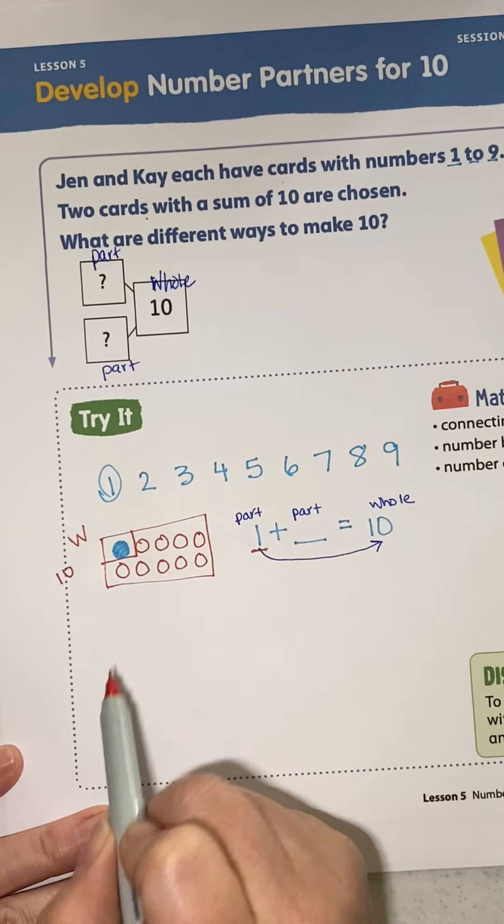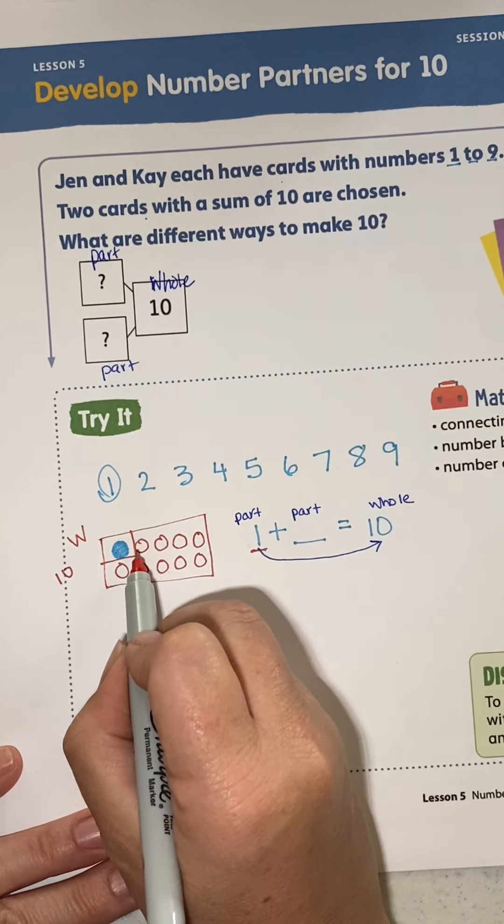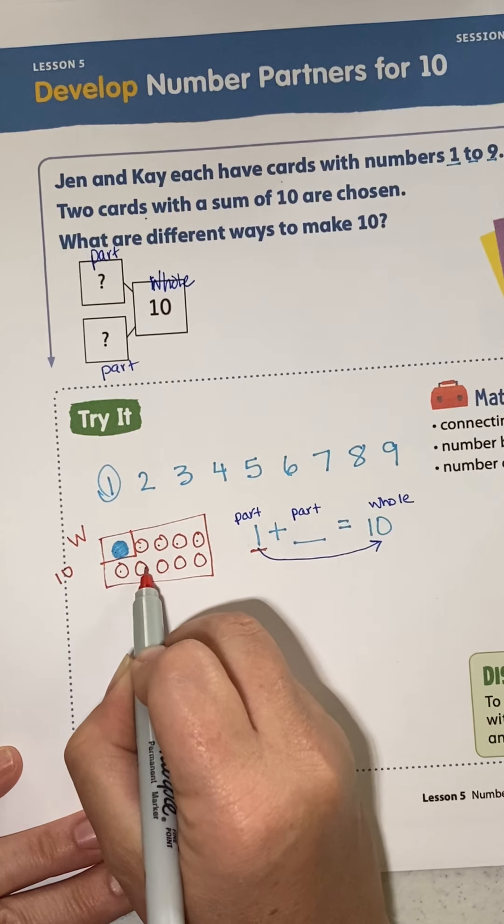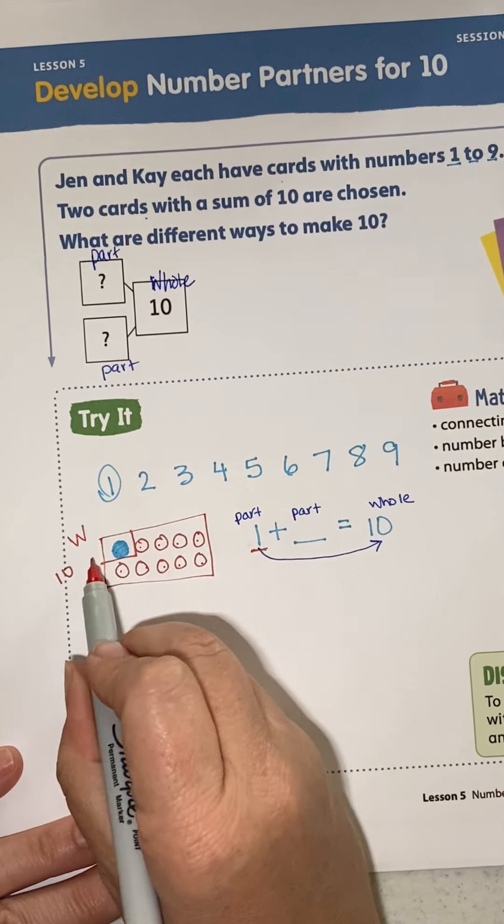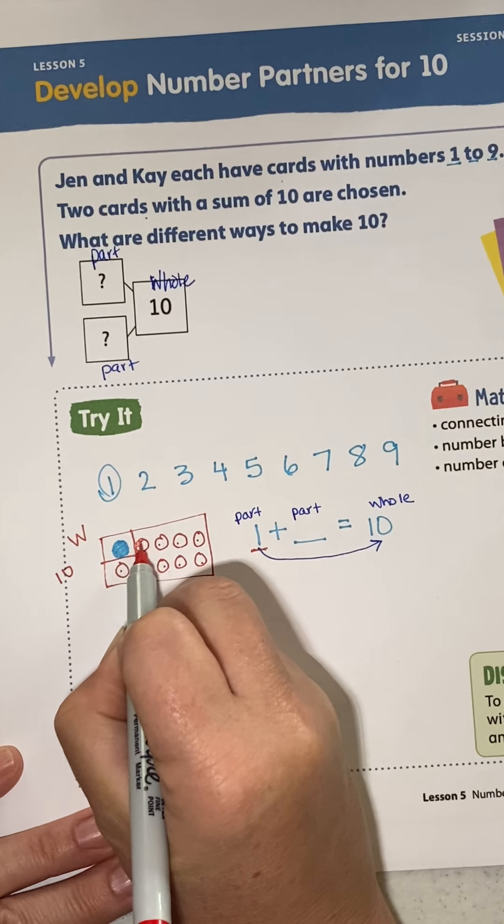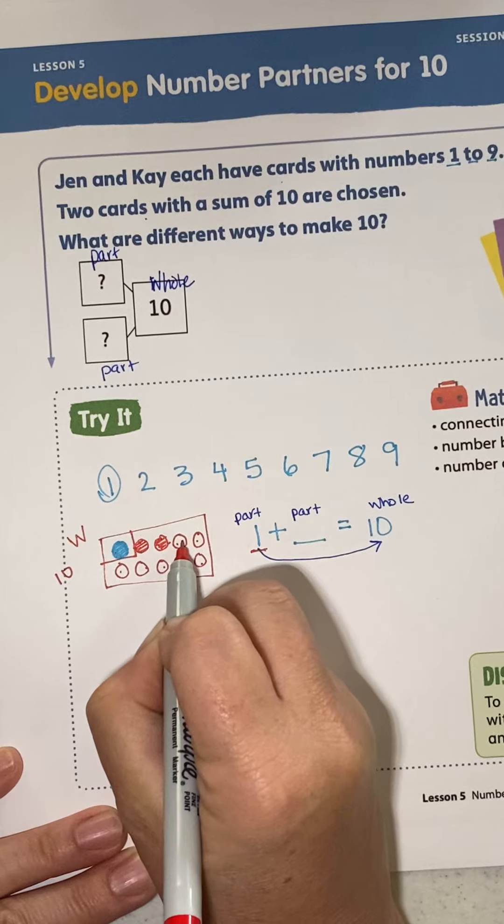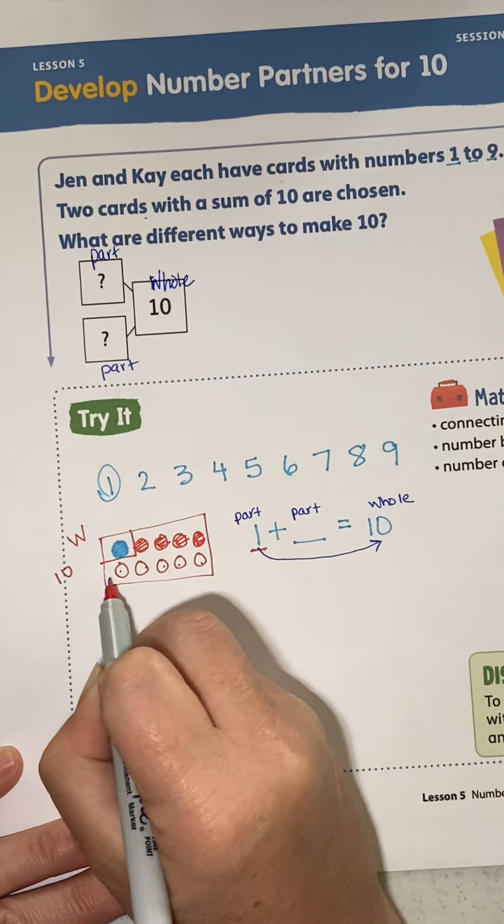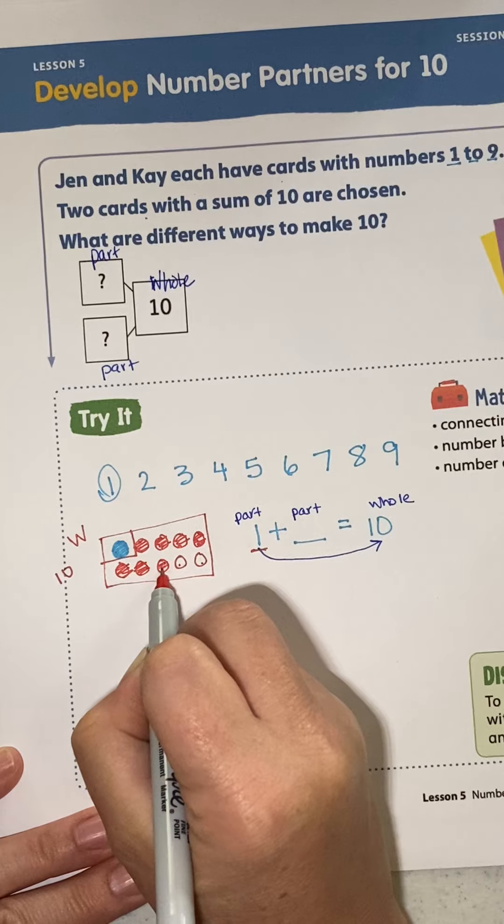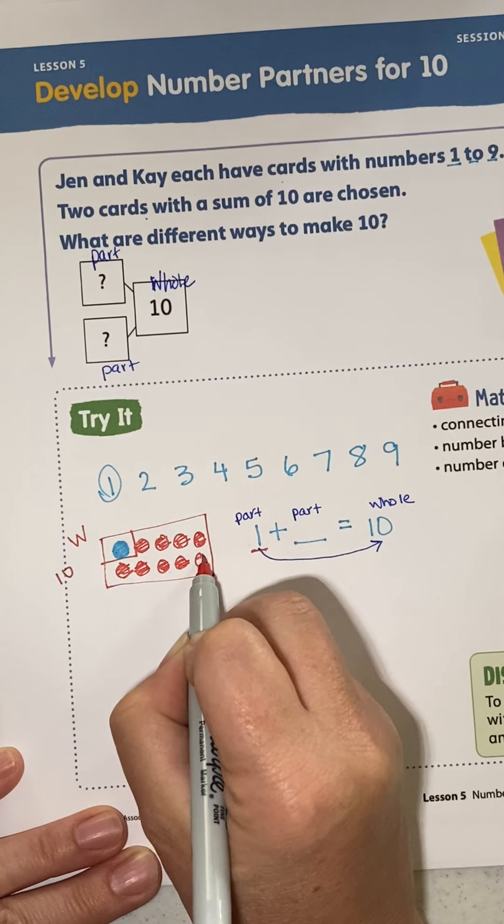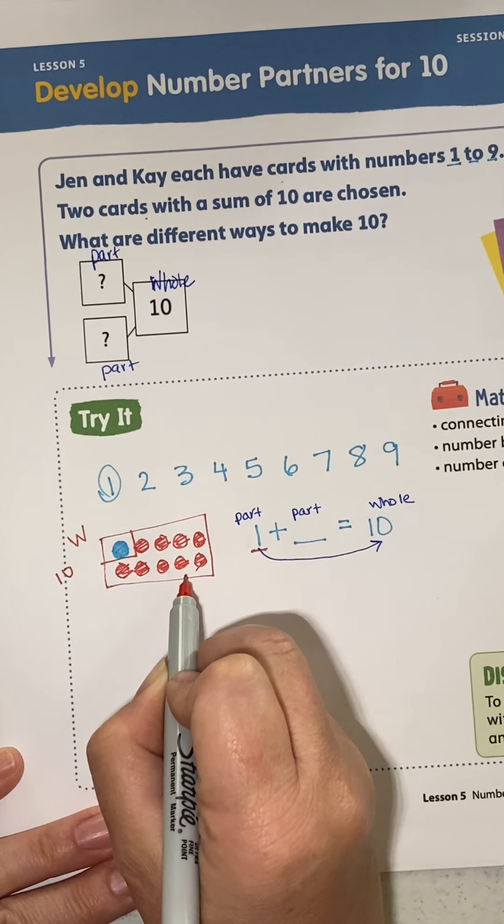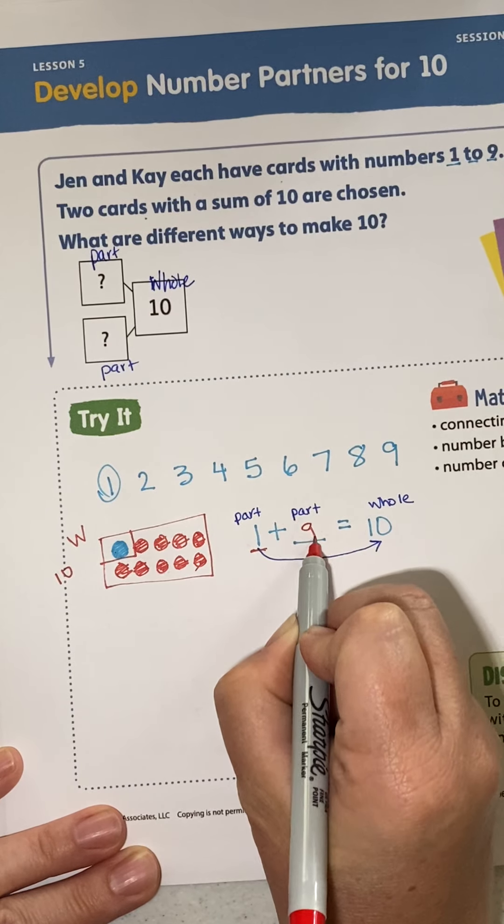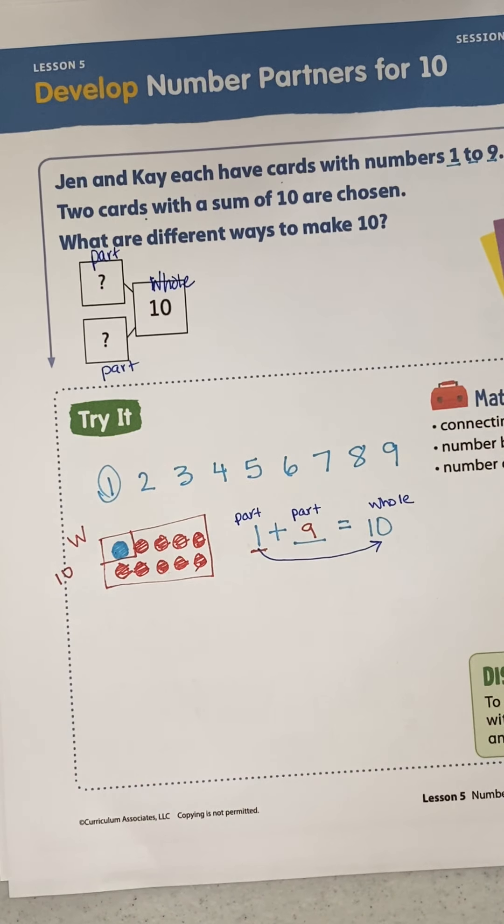What is my missing part? 1, 2, 3, 4, 5, 6, 7, 8, 9, 10. Okay, how many are here? Let's count: 1, 2, 3, 4, 5, 6, 7, 8, 9. So 1 plus 9 equals 10.